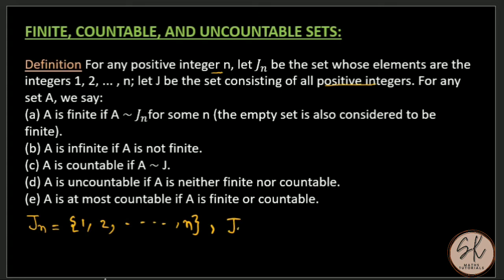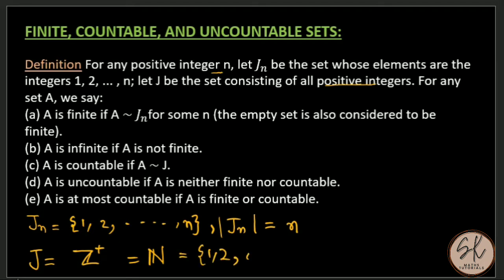The cardinality of Jn is n because it has n elements. J is the set of all positive integers, that is J = Z+ which equals the set of all natural numbers, starting from 1 and going up to infinity.